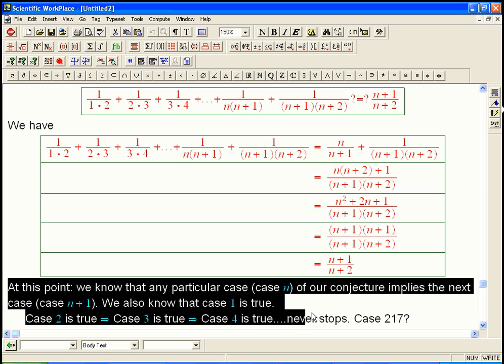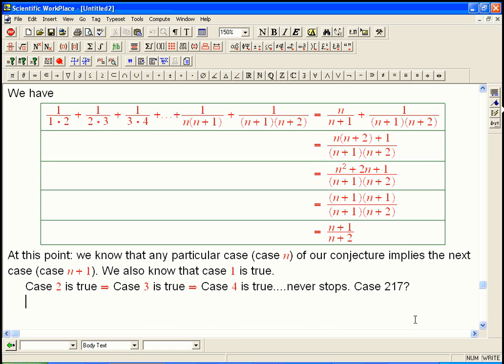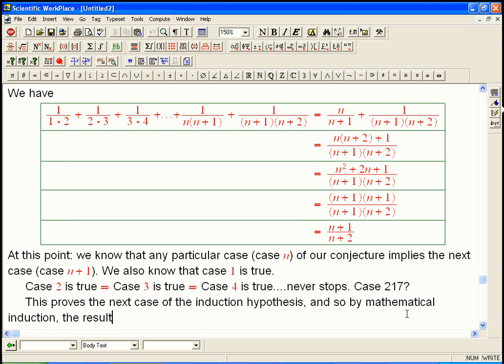So you don't always have to say this. Instead, to summarize this, we can just say this proves the next case of the induction hypothesis, and so by mathematical induction, the result is true for all N. And that's the miracle of induction, is that we just had to do one calculation, and this kind of telescoping effect, or like dominoes, is the traditional metaphor. We pushed the first domino, and that made all the other dominoes go.